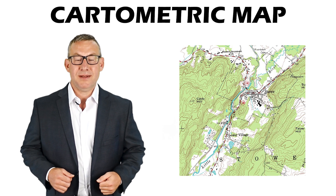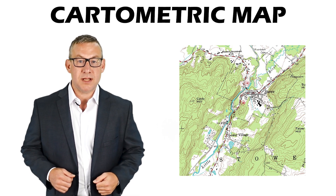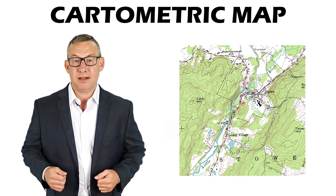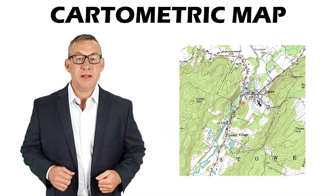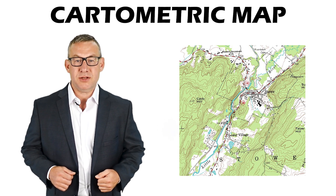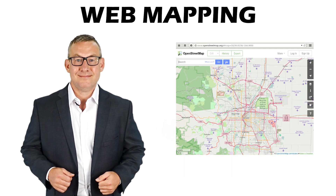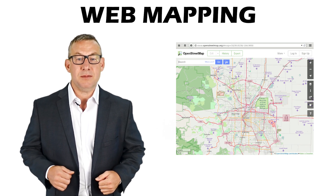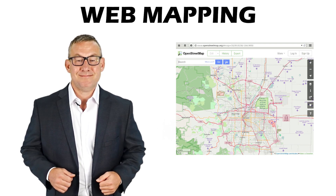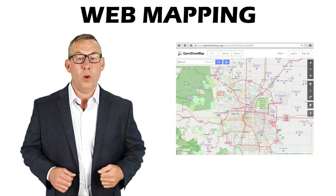A cartometric map accurately represents the relative position of objects and may be used as a source of data — USGS topographic maps are well-known cartometric maps. Web mapping uses the internet to generate and distribute spatial data and maps, usually providing a service where users can choose what is shown on a map.